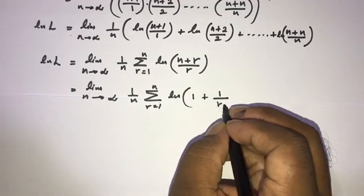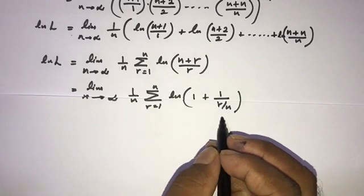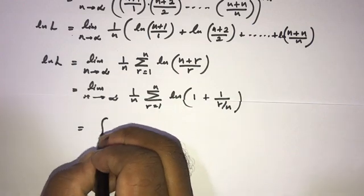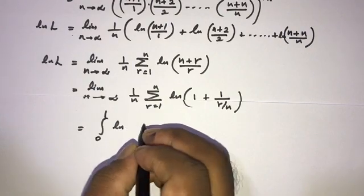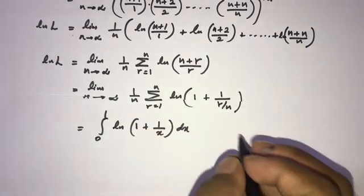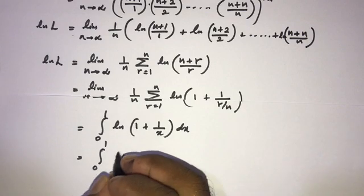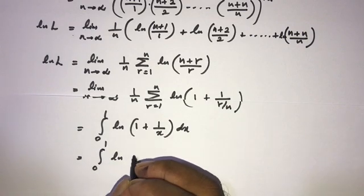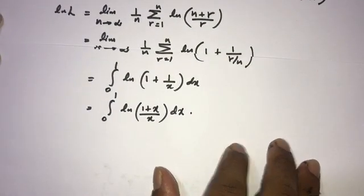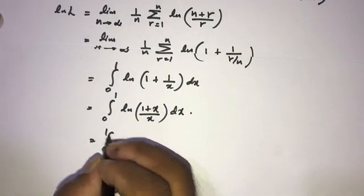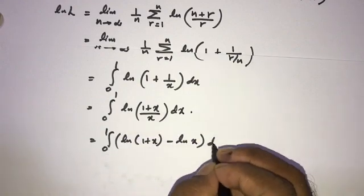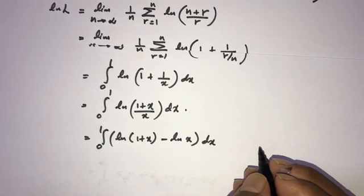Now I am going to use the Newton-Leibniz rule, so this Riemann sum becomes the integral from 0 to 1 of natural log of 1 plus 1 over x dx, which equals the integral from 0 to 1 of natural log of (1 plus x) over x dx, which we rewrite as the integral from 0 to 1 of natural log of (1 plus x) minus natural log of x dx.